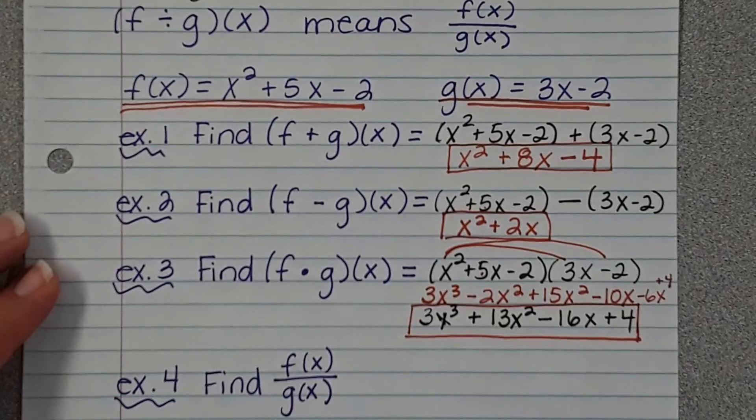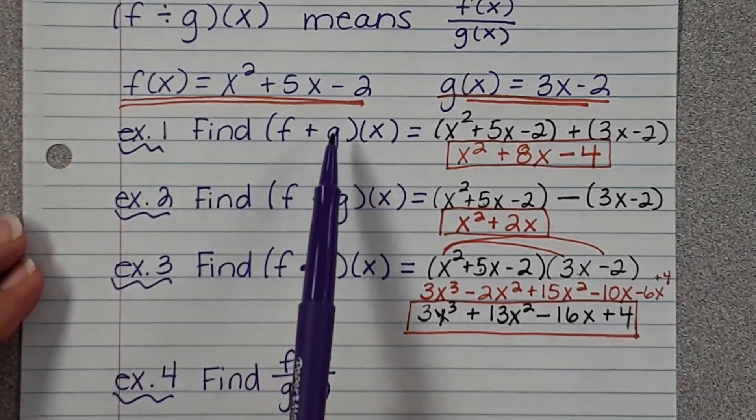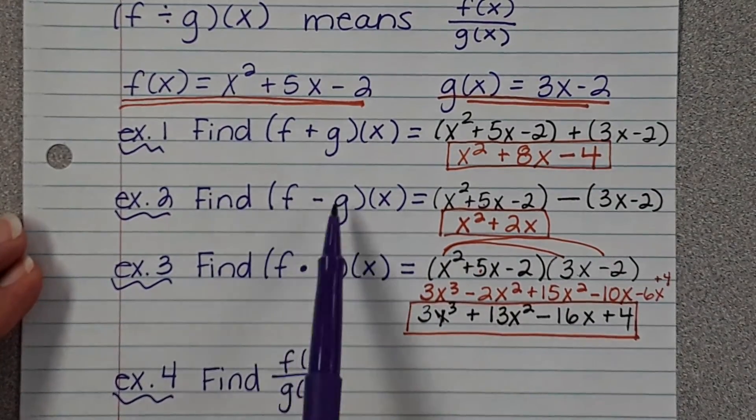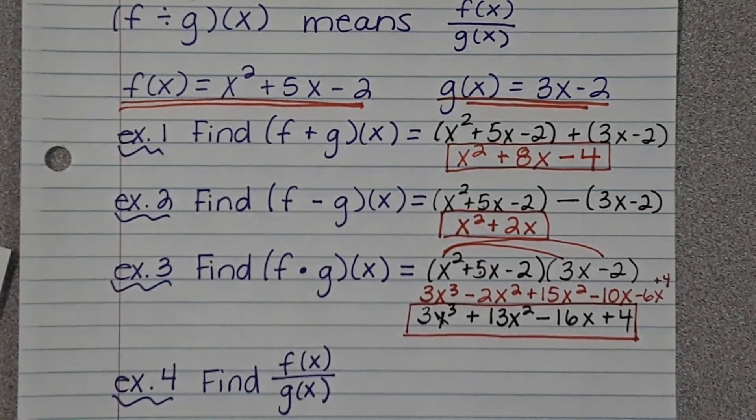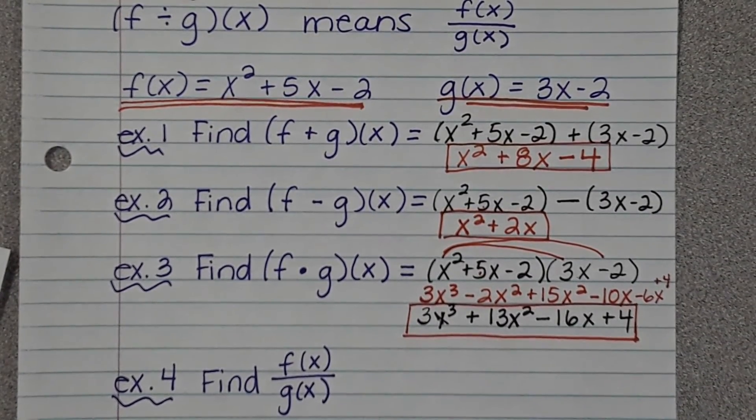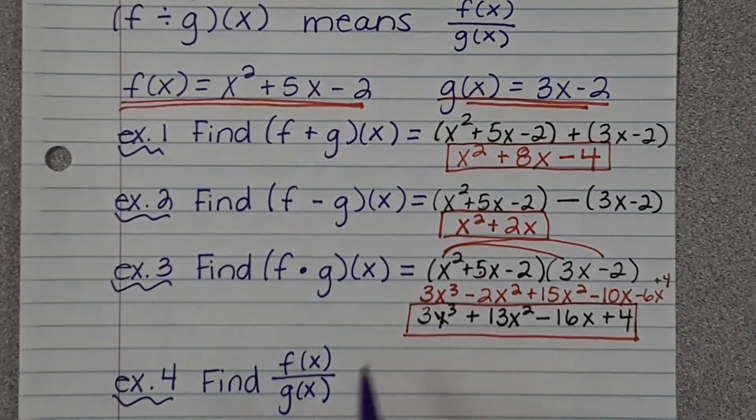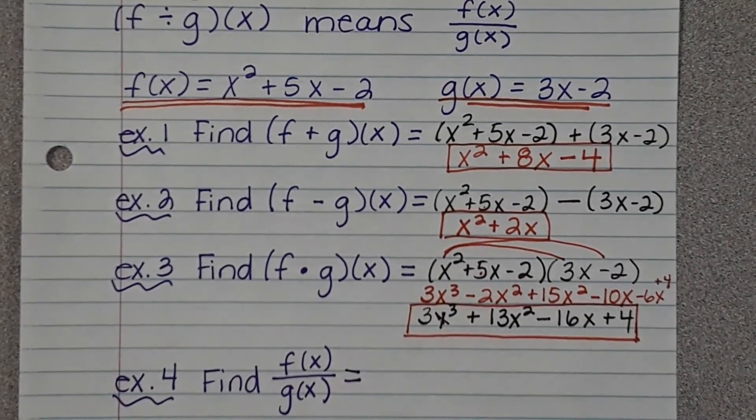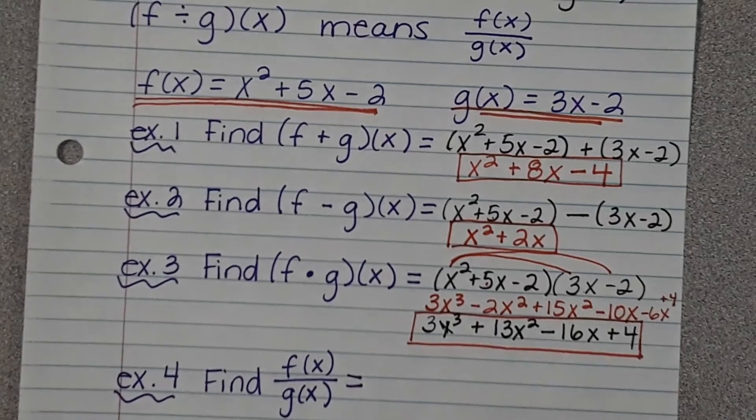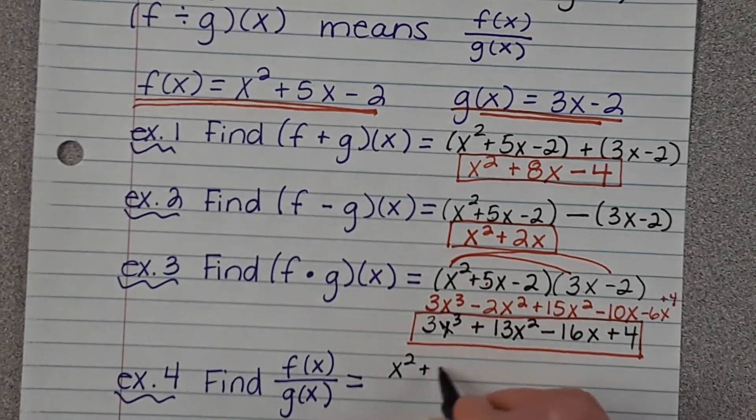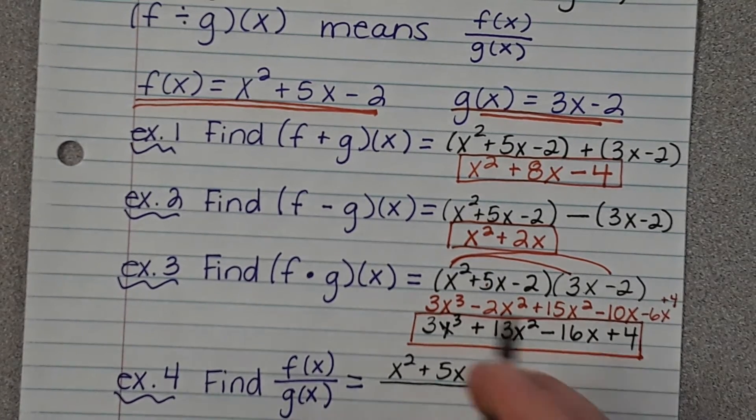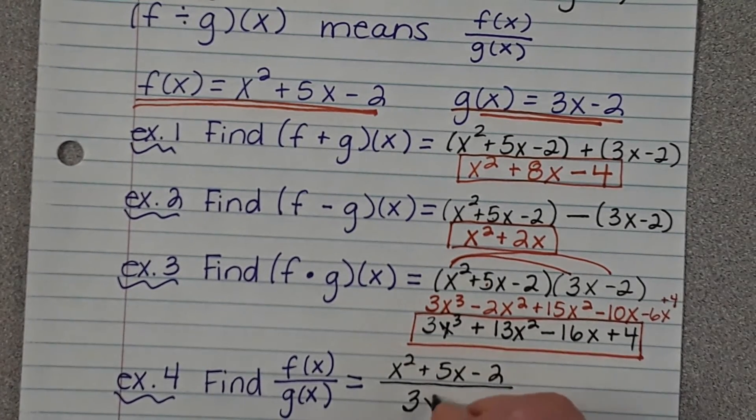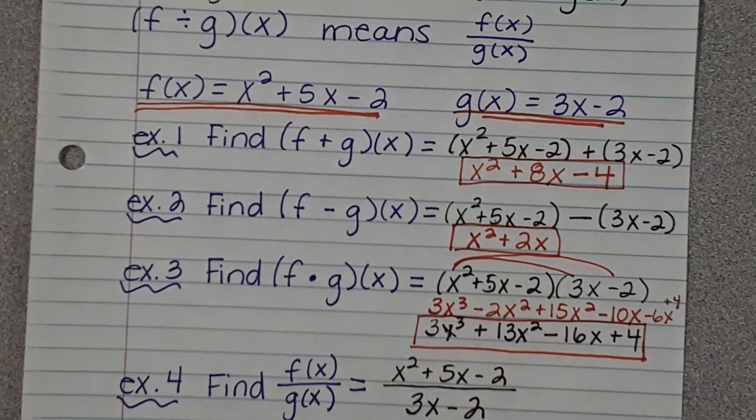Now, they could change the order. They could change the order and put g plus f, g minus f, g times f. So just make sure you're paying attention to how they want you to do it. So what is f of x? And what's g of x?